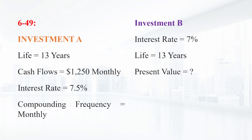You have your choice of 2 investment accounts. Investment A is a 13-year annuity that features end-of-month $1,250 payments and has an interest rate of 7.5% compounded monthly. Investment B is a 7% continuously compounded lump sum investment good for 13 years. How much money would you need to invest in Investment B today for it to be worth as much as Investment A 13 years from now?